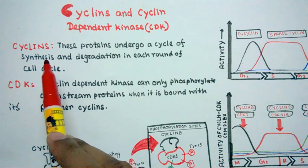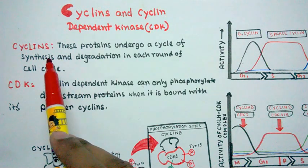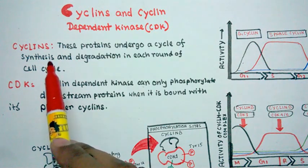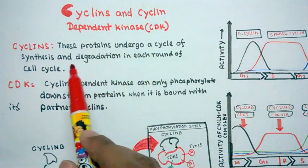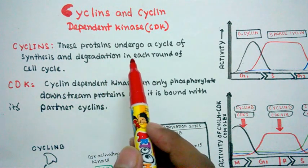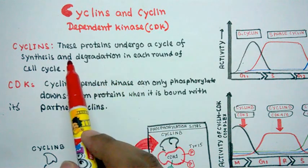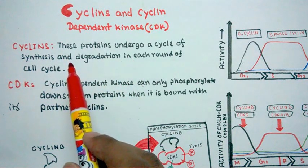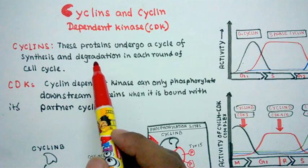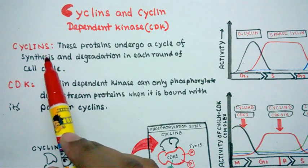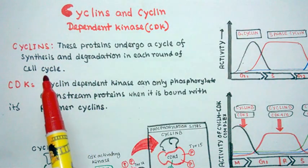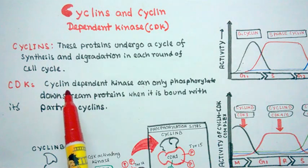The name 'cyclin' relates to a cycle or circle. These proteins undergo a cycle of synthesis and degradation during each round of the cell cycle. That is why the name is 'cyclin' — because it is produced in a cyclic manner and also degraded in a cyclic manner.